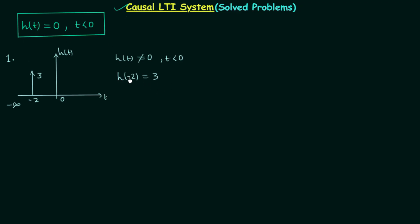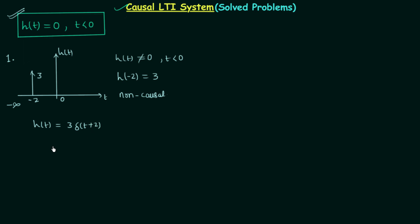Since the condition is not satisfied, the given LTI system is non-causal in nature. We can also extend this problem by writing the mathematical form of the impulse response from the waveform: h(t) equals 3 times delta(t+2). From here we can obtain the relationship between output and input and check causality that way.